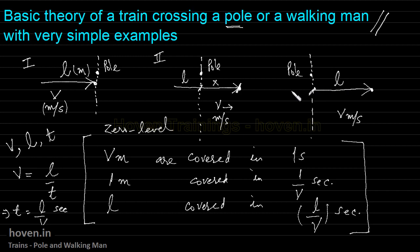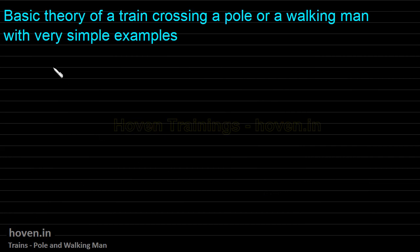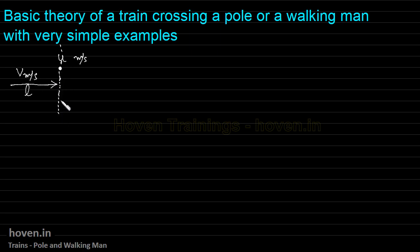Now let us take another example of a train crossing a walking man. In that case, the pole will be walking towards the right side at a certain speed. We will calculate how much time the same train takes to move past that man who is walking towards the right side. Let us draw the three scenarios. This is the man who is traveling at u meters per second towards the right side. This is a train of length l moving at v meters per second. The train has just touched this man — the man is also traveling towards the right.